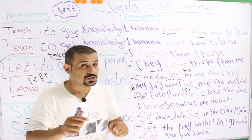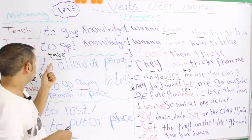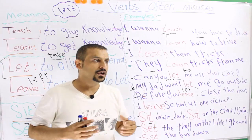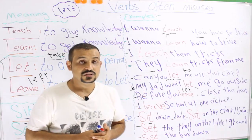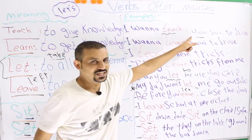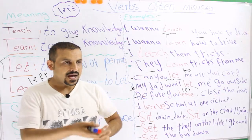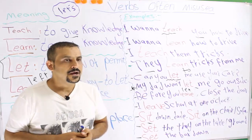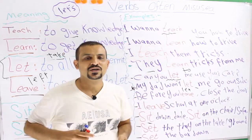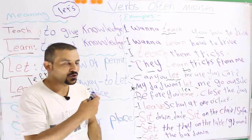Always say: 'I learn from my dad' — I get knowledge from my dad. 'I learn from my mom.' But: 'My mom teaches me how to be a good person.' Teach is to give; learn is to receive or take.